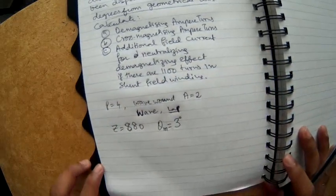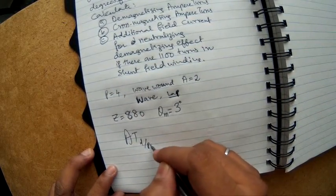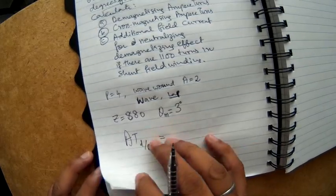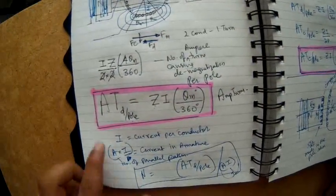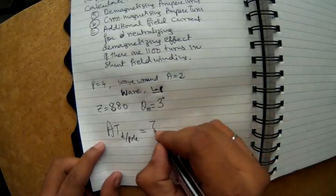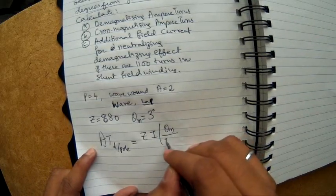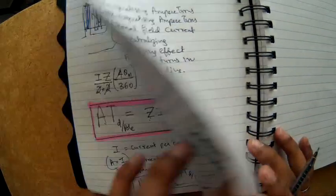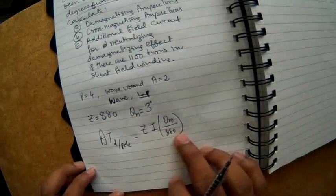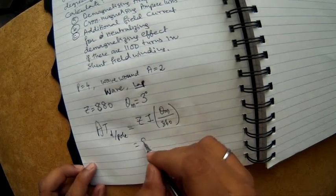Calculate demagnetizing ampere turns. Very simple. So ampere turns causing demagnetization per pole is equal to - so remember in our previous video we just solved that. So this is the formula for that. I will just copy that here. So Z I theta m by 360 degrees. So this is the ampere turns causing demagnetization per pole.